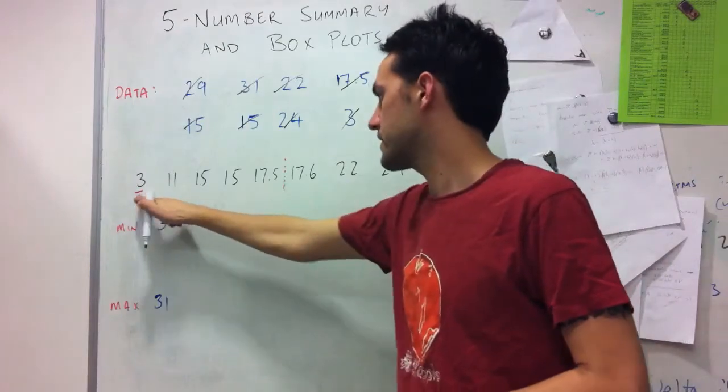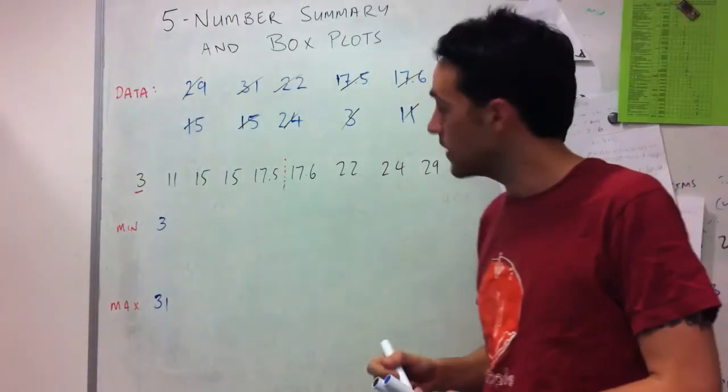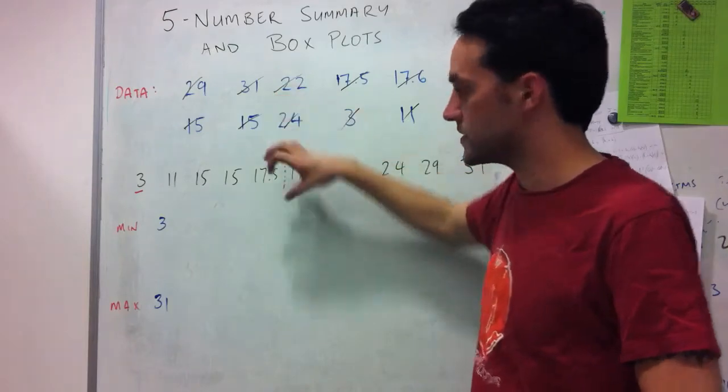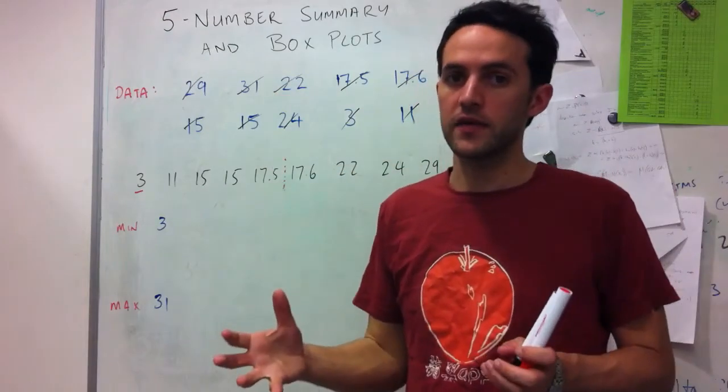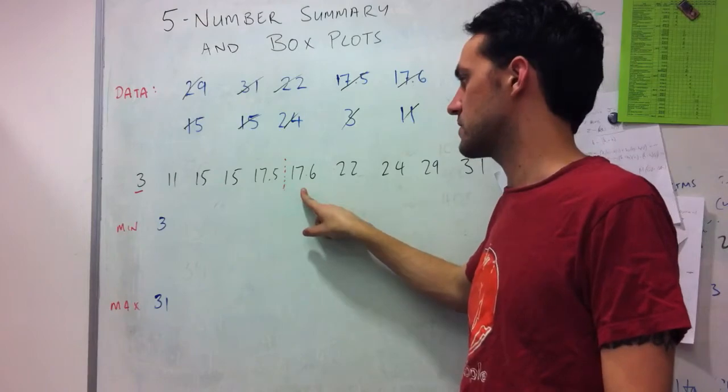See, I've got 5 to the left, 5 data to the right. And so since I've got an even number of numbers, I actually take the average of these two here.